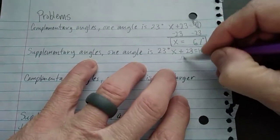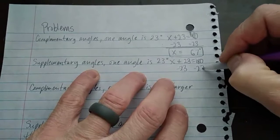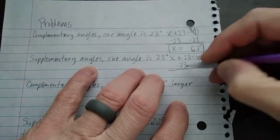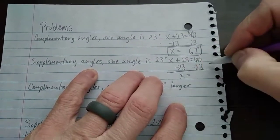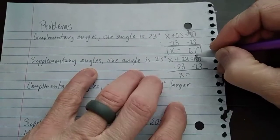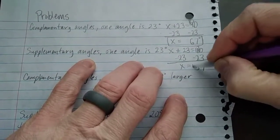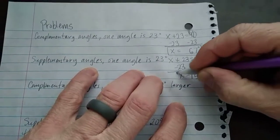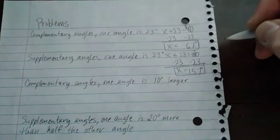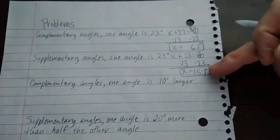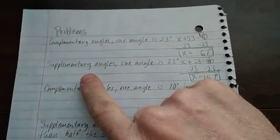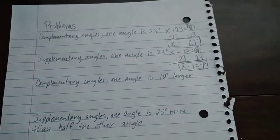What measure plus 23 equals 180? So this time we are subtracting 23 from both sides. So x equals, again I'm going to borrow from the 8 this time, make that a 7, so 10 minus 3 is 7, 7 minus 2 is 5, 157 degrees. So 157 degrees is the supplement to 23 degrees.